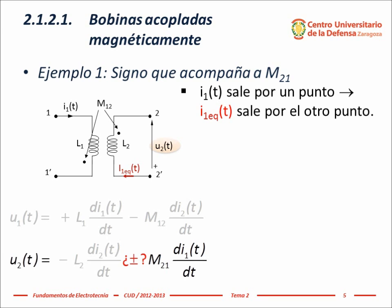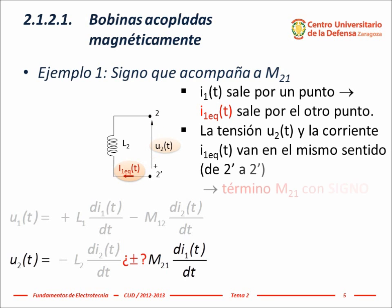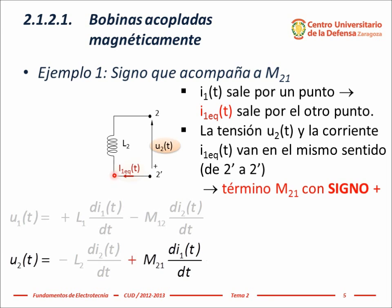As the voltage on coil 2 and the equivalent current flowing through coil 2 have the same direction — both references go from terminal 2' to 2 — the sign of the term M sub 2 1 is positive.